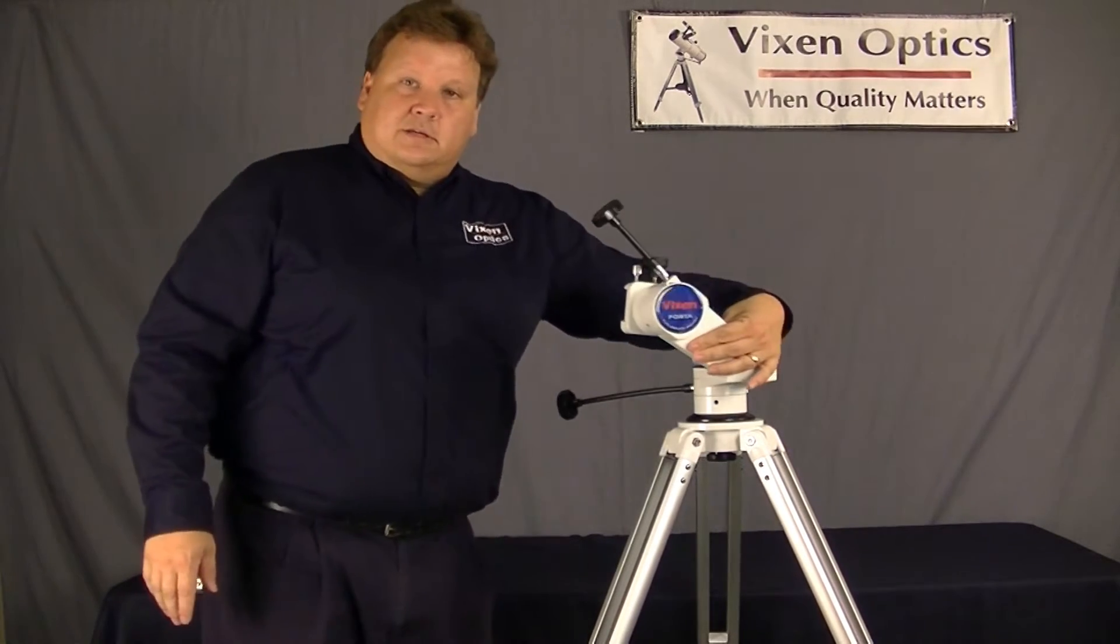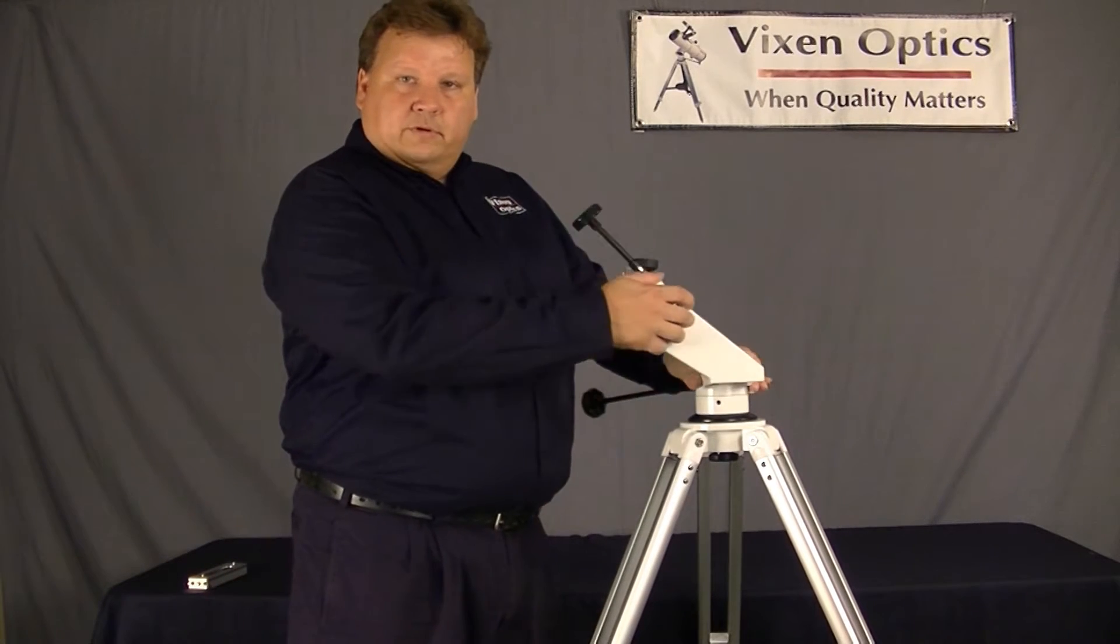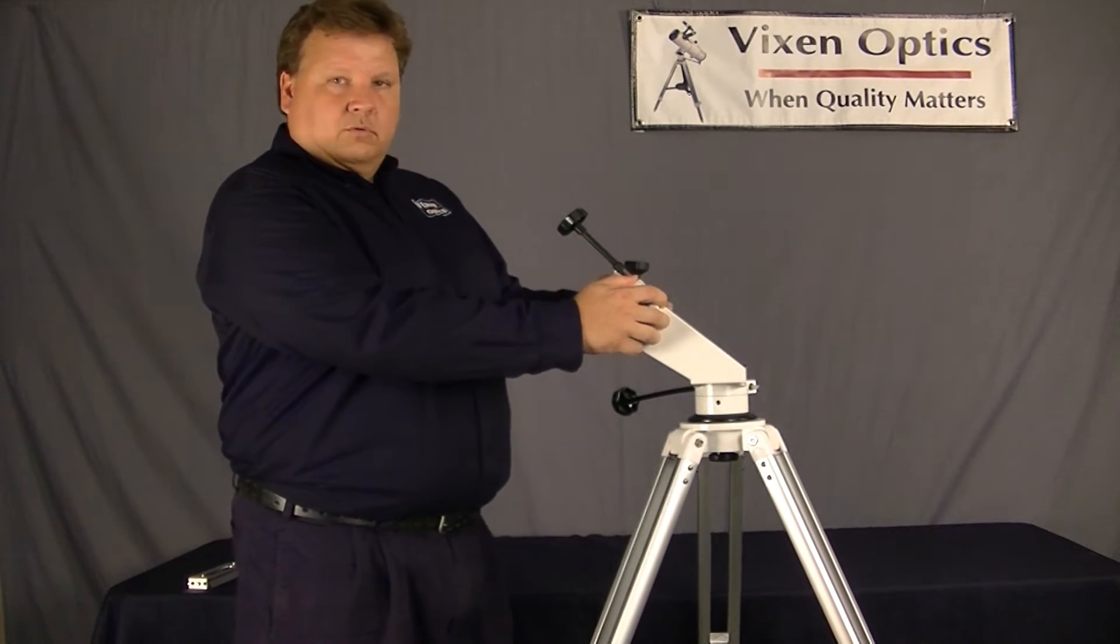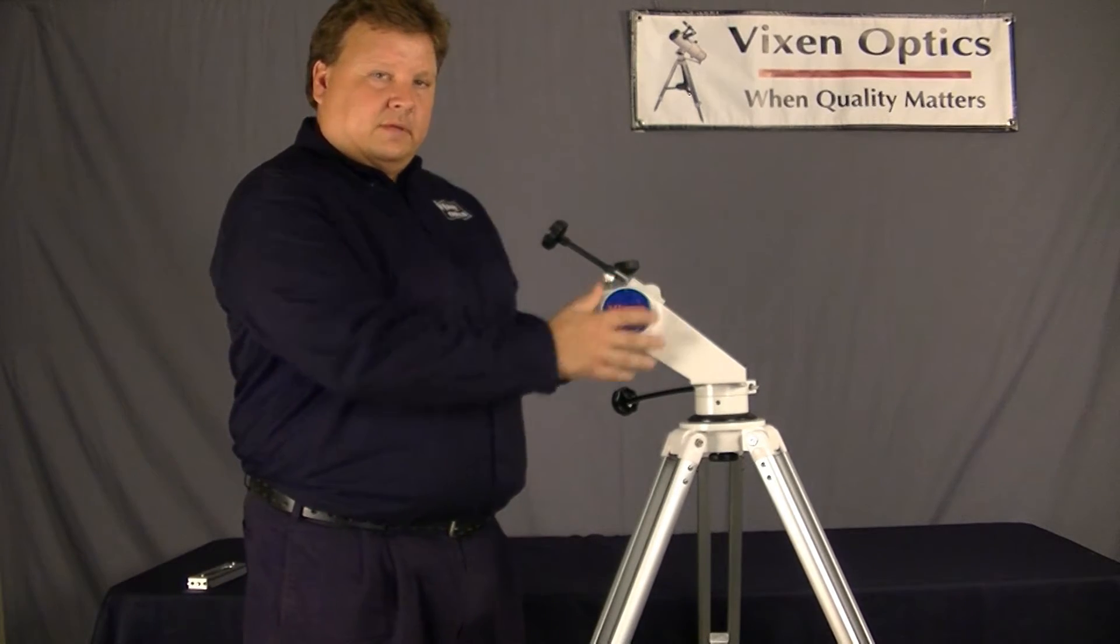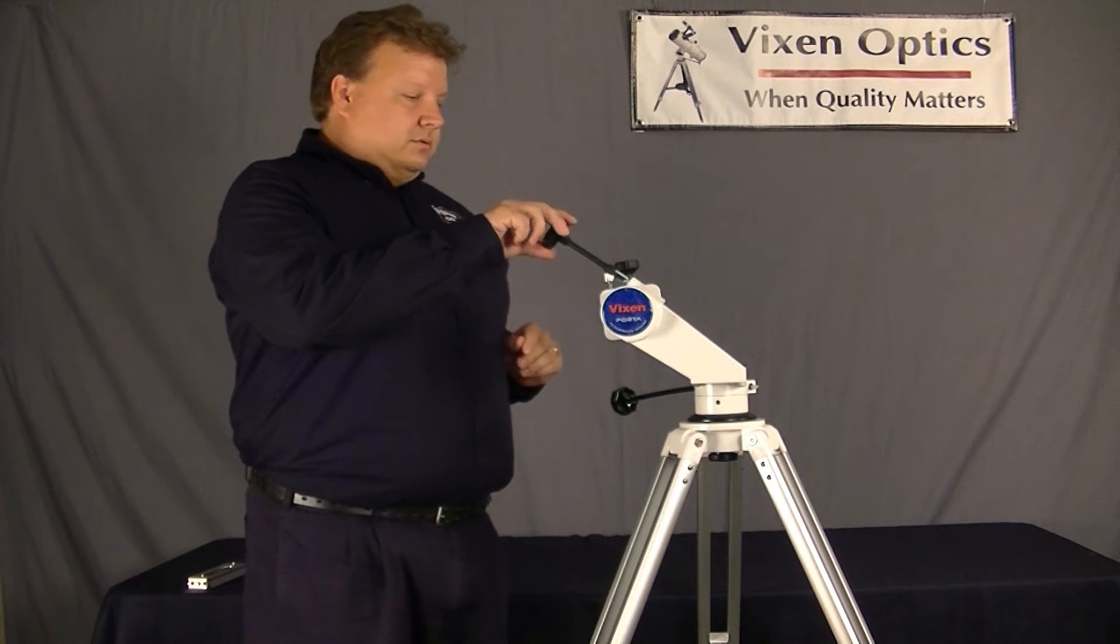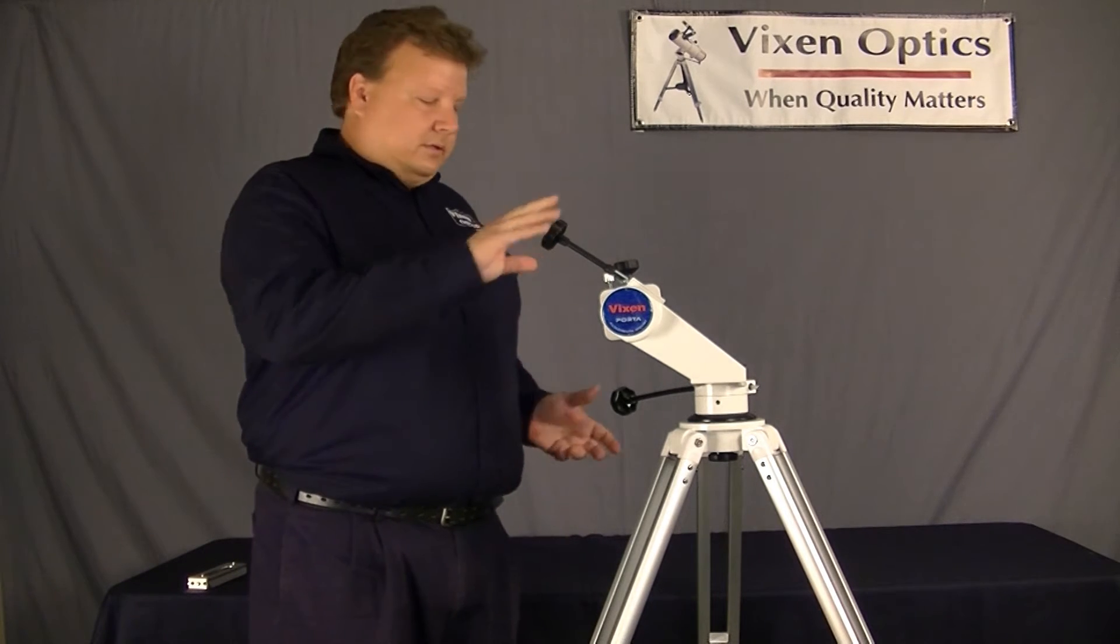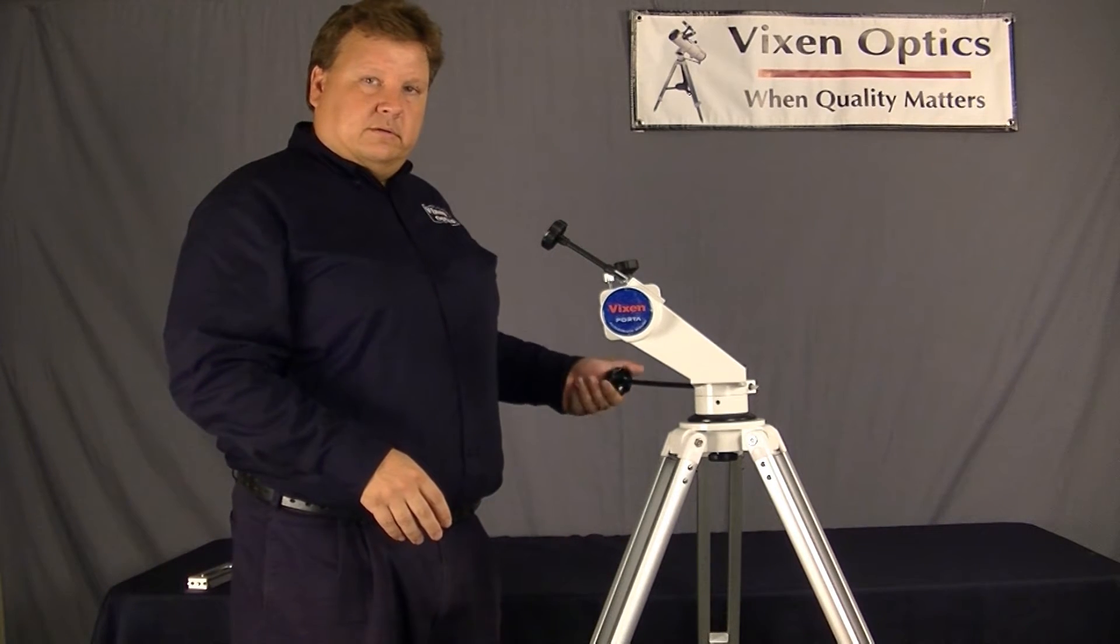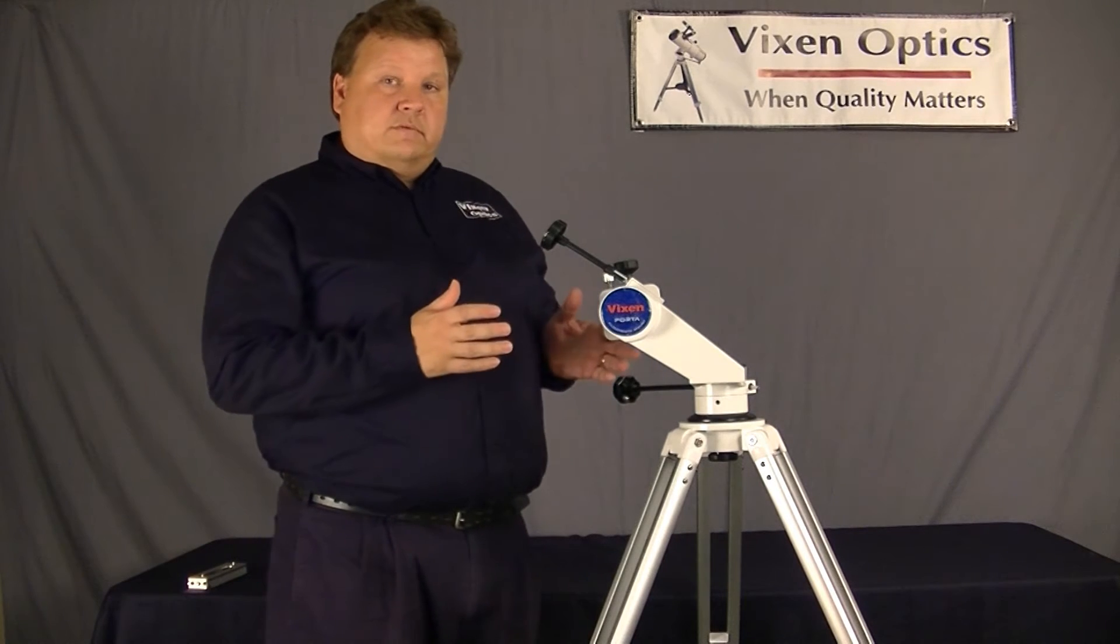Once you have a telescope attached, you can simply move it back and forth or up and down by hand. Now once you're on an object, if you want to make slight movements, you can use the slow motion controls here and here. Very intuitive and easy to use.